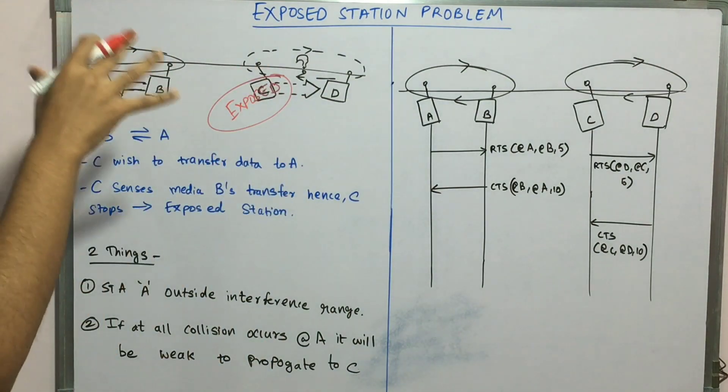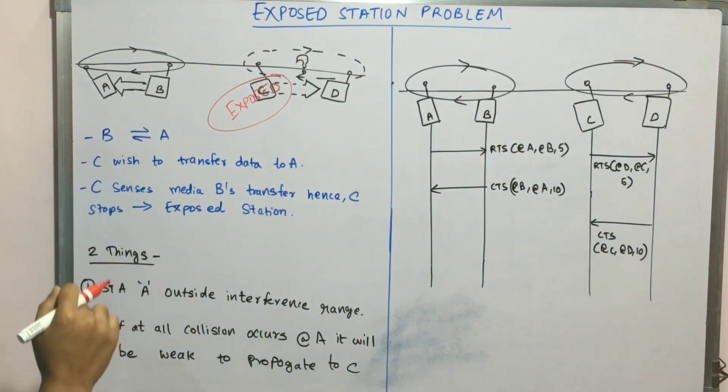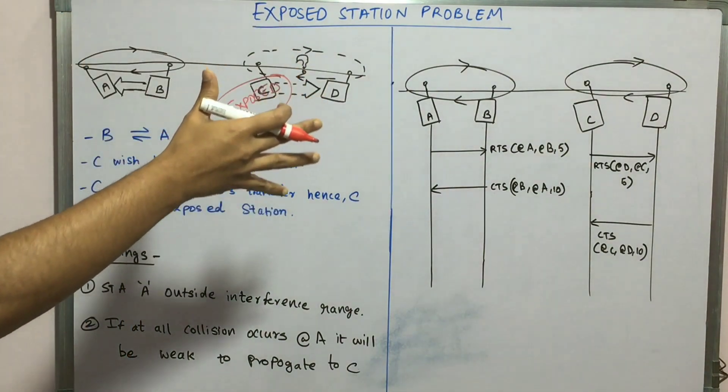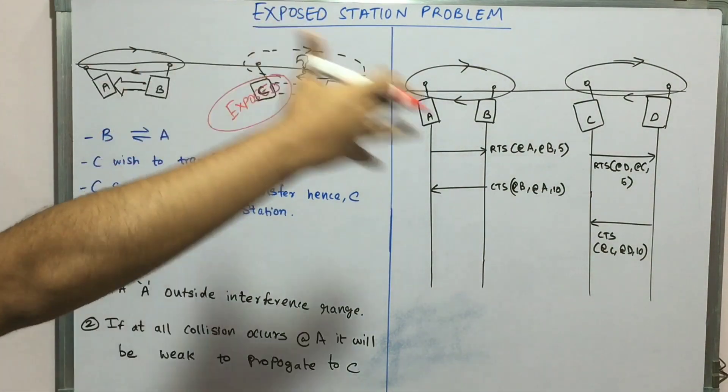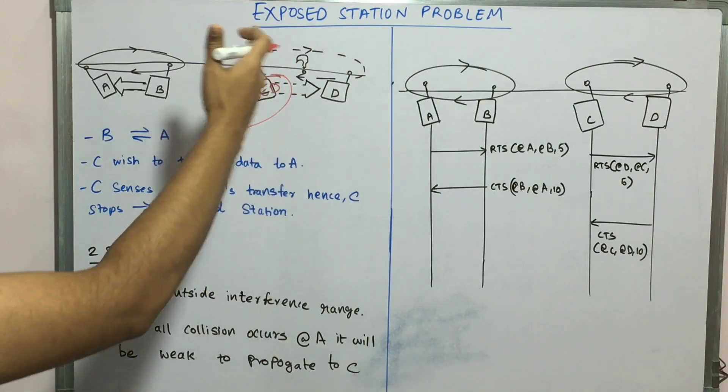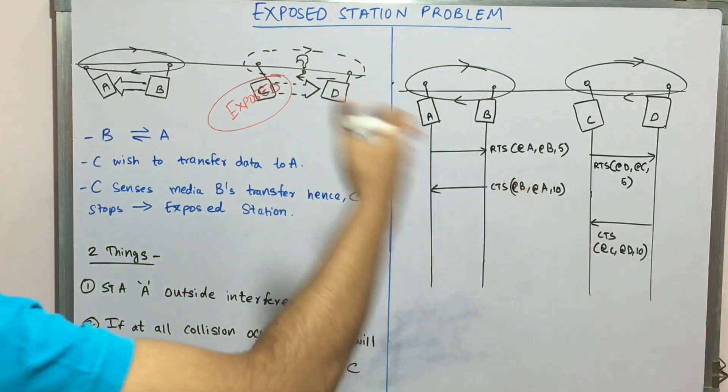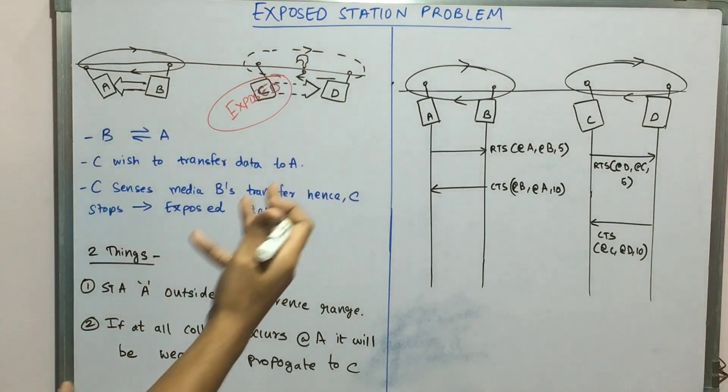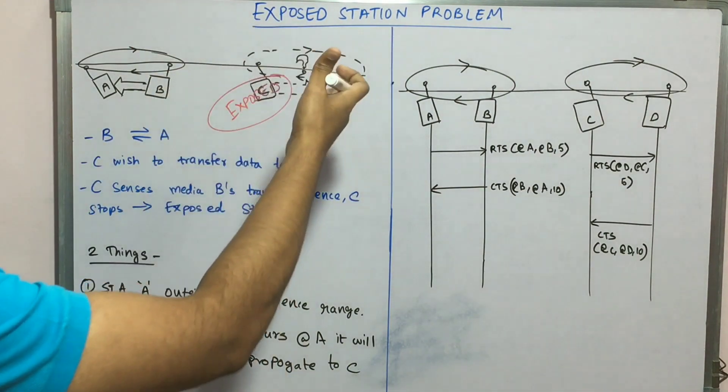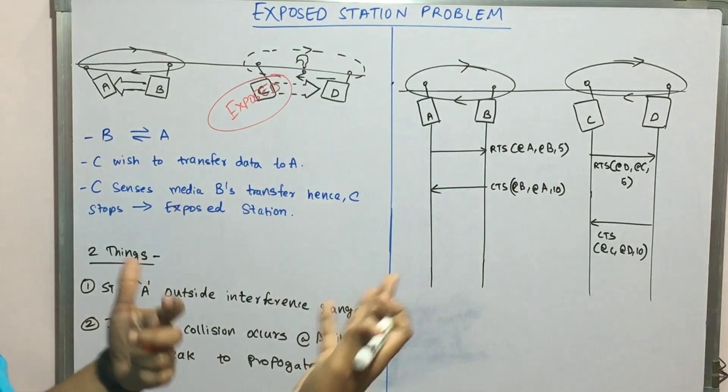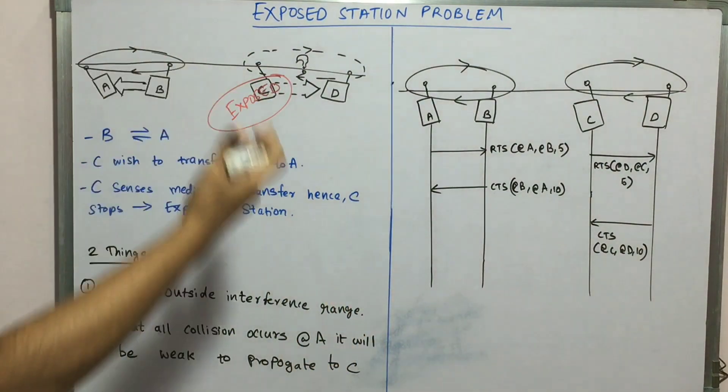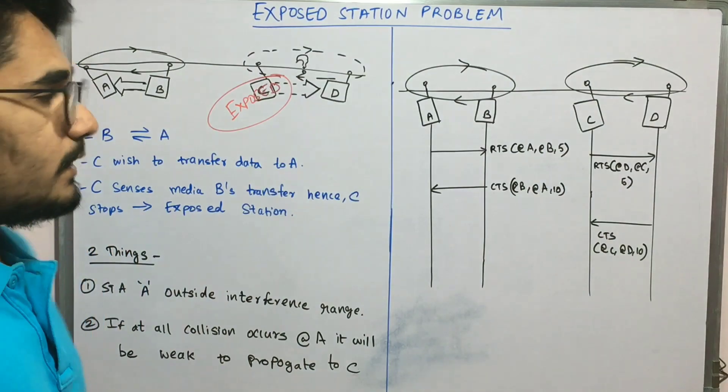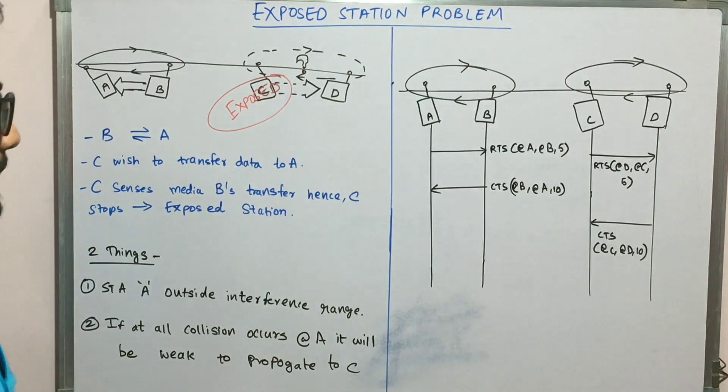There are two things to consider. First, station A is outside the interference range of stations C and D - they are well separated from each other. If any collision occurs at A, it will be weak to propagate to C, meaning the signals will not be so strong but will be weak as they propagate to C.